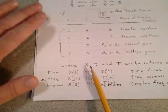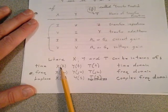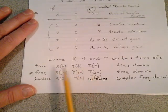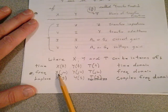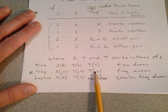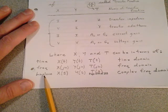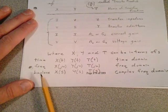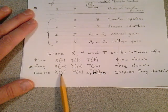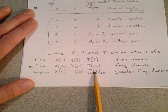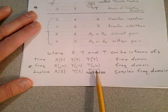Keep in mind the values of x, y, and T can be in terms of time — y of t, x of t, transfer function in the time domain. In the frequency domain it can be in terms of jω: x of jω, y of jω, transfer function as a ratio of jω. And finally, using the Laplace variable s — s is simply jω — so you have x of s as the input, y of s as the output, and the transfer function T of s in the complex frequency domain where the complex frequency variable is s.